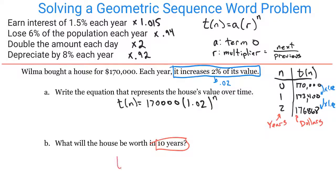It's really asking us to find T(10), which is $170,000 × 1.02^10. If you do that math on your calculator, you get $207,229.05. That's a pretty good increase in the total value of your house in 10 years.